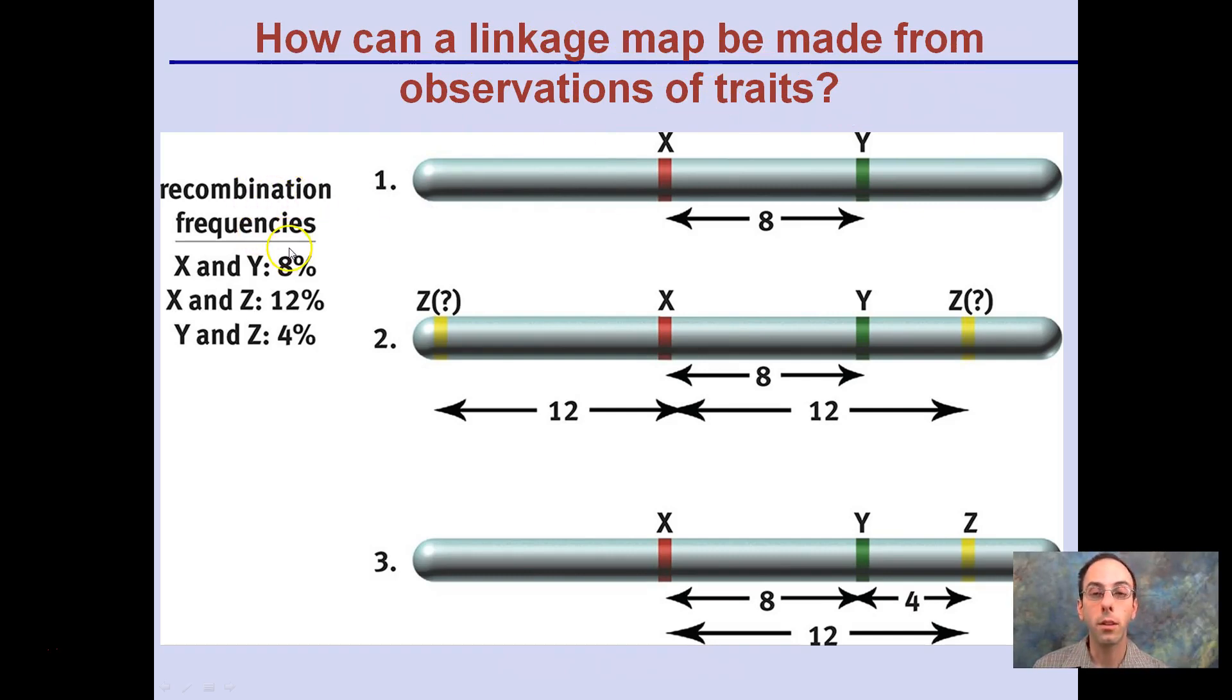We're looking at a linkage map that estimates the distance between genes. More closely linked genes will be closer together, and less closely linked genes will be further apart. So we're looking at a linkage map to try to determine the location of certain genes in relation to one another and how close or how far they may be. As an example, how can linkage maps be made from observations of traits?